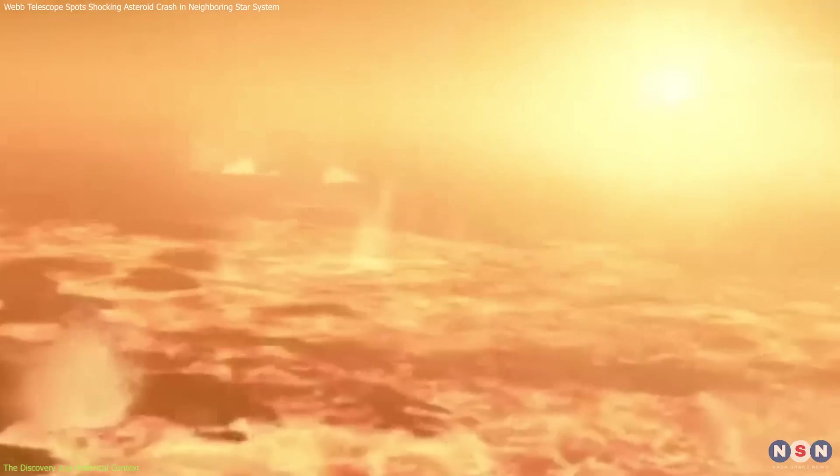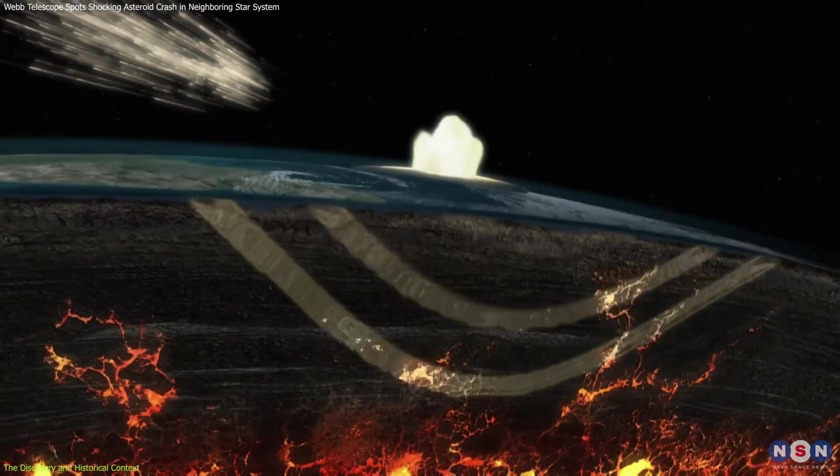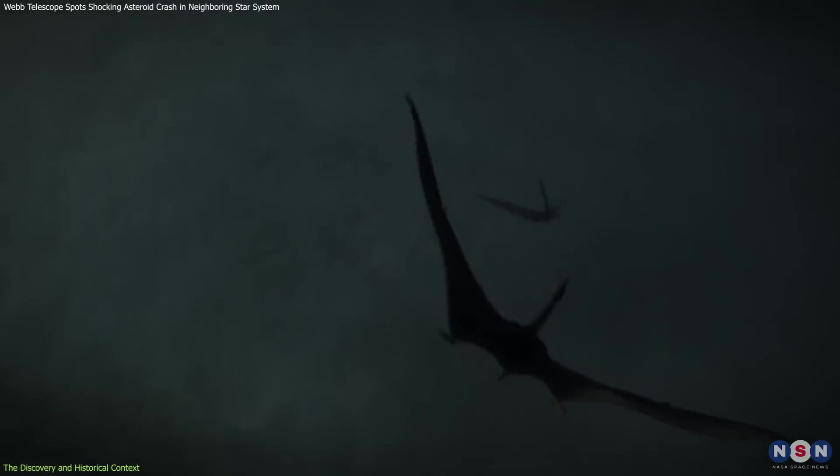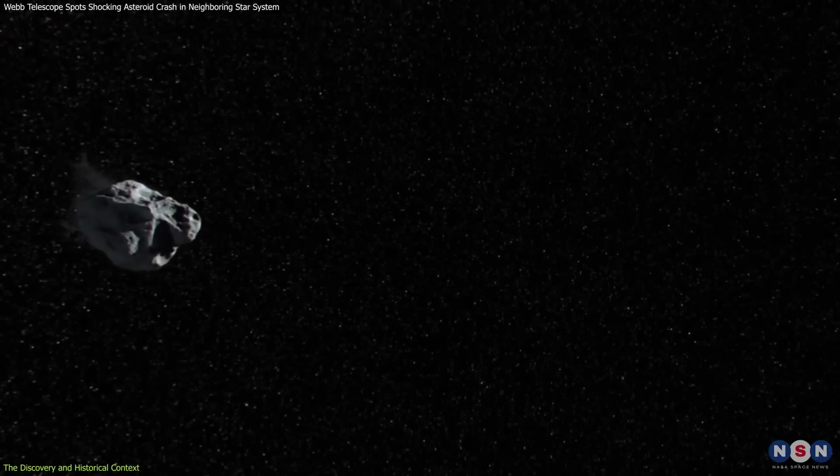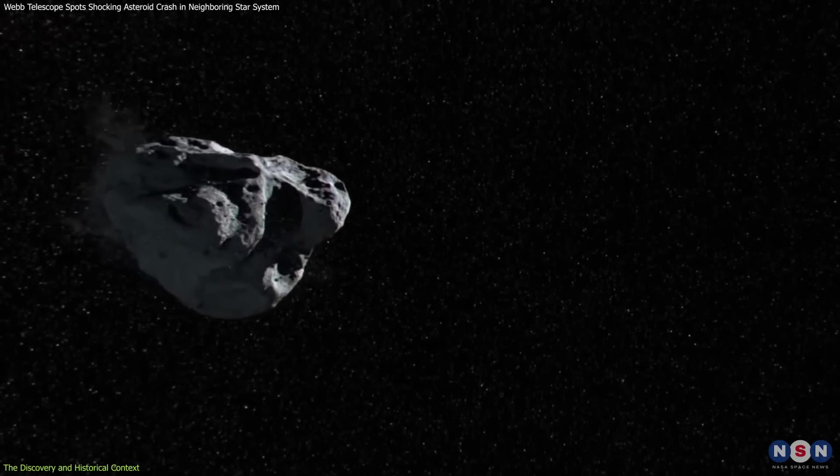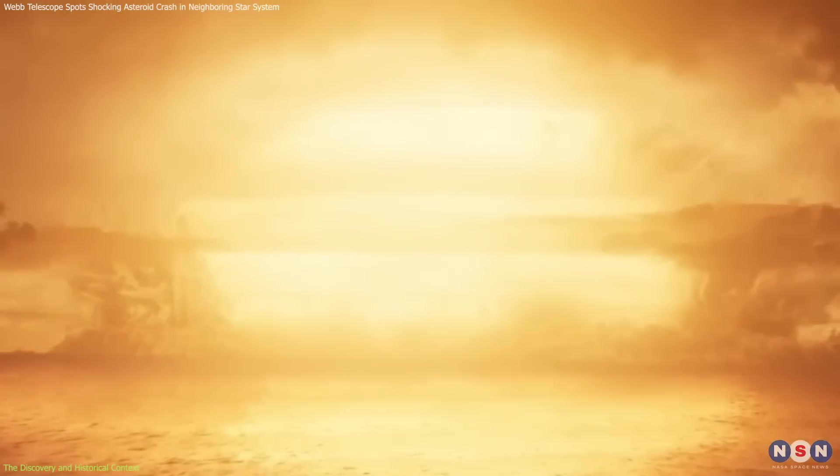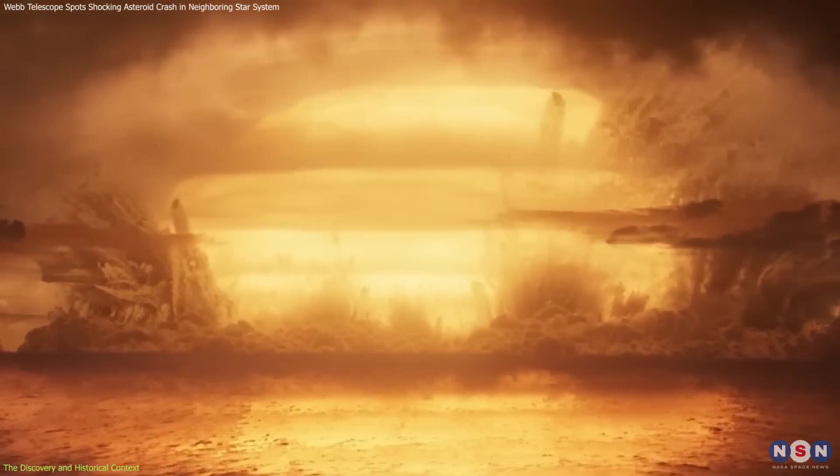Historically, asteroid collisions have played a crucial role in shaping our understanding of the solar system. Notable examples include the Chicxulub impact, which led to the extinction of the dinosaurs 66 million years ago. The Chicxulub impact, estimated to have been caused by an asteroid about 10 kilometers in diameter, had devastating effects on Earth, including massive tsunamis, fires, and a prolonged impact winter caused by dust and aerosols blocking sunlight.